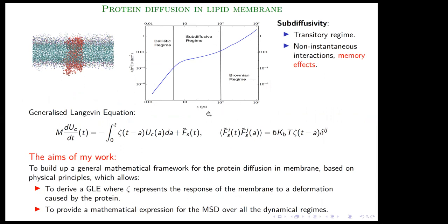In a more complicated environment like the lipid membrane, we no longer have just ballistic and Brownian regimes but also an additional regime called subdiffusion. From MD simulations using the software GROMACS, I built a system with many particles and precise interaction potentials characterizing the lipid membrane. The interactions differ between atoms within the protein and those in the lipid membrane, and include electrostatic and bonded interactions to ensure the protein does not break apart.